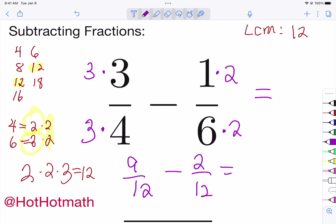So now we proceed like we do for any fractions. We are going to keep the denominator, the denominators are our bottom number. We're just going to subtract the top. Nine minus two is seven. So our answer is seven twelfths. So that's how you subtract fractions that have unlike denominators.